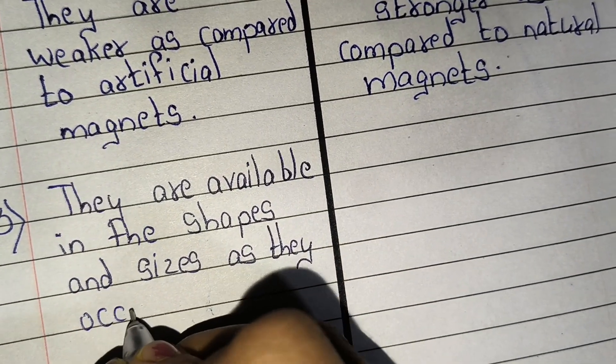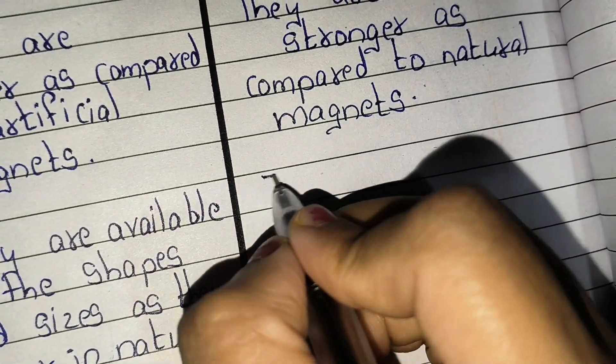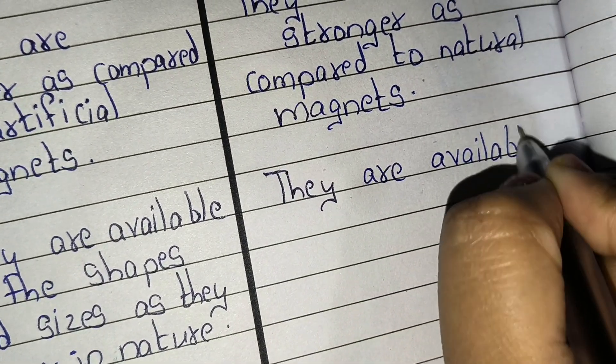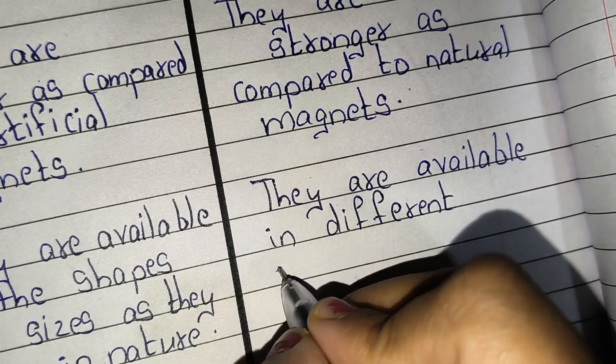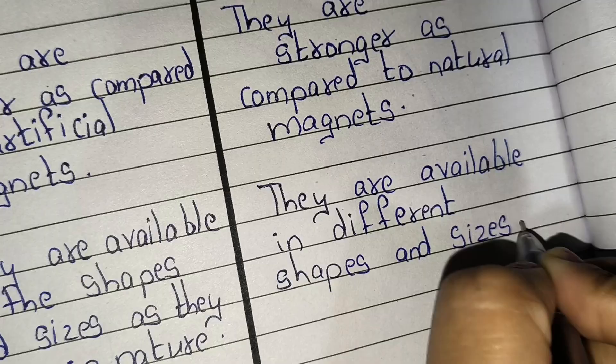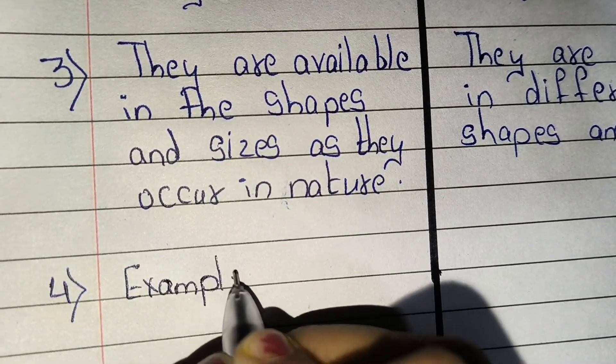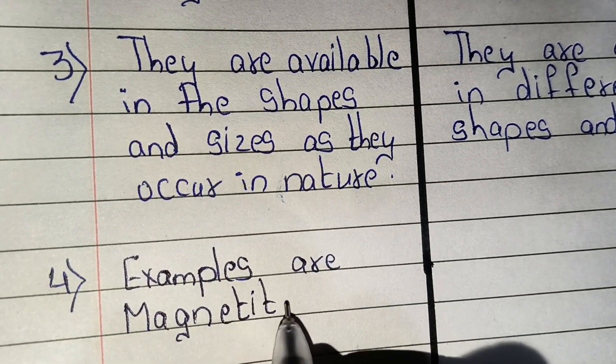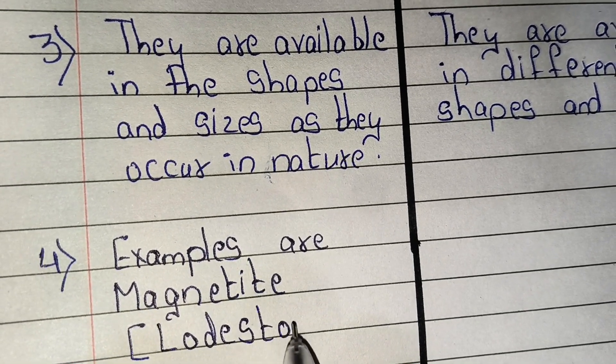as they occur in nature, but artificial magnets are available in different shapes and sizes. Fourth point: examples of natural magnets are magnetite, in bracket lodestone.